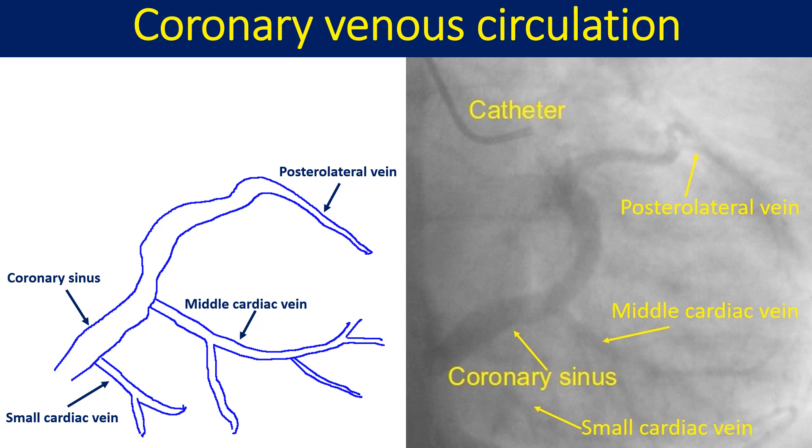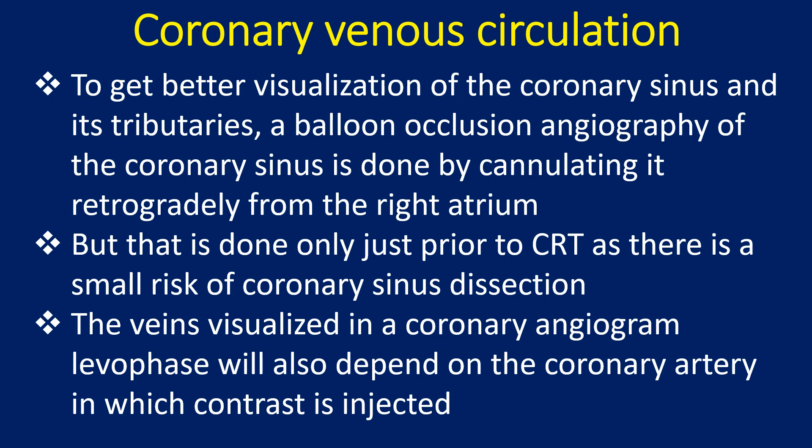Here is a coronary angiogram levophase with a line diagram beside it. To get better visualization of the coronary sinus and its tributaries, a balloon occlusion angiography of the coronary sinus is done by cannulating it retrogradally from the right atrium. However, this is done only just prior to CRT as there is a small risk of coronary sinus dissection.